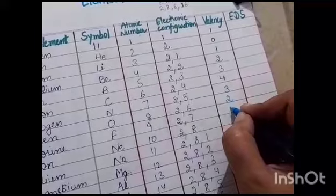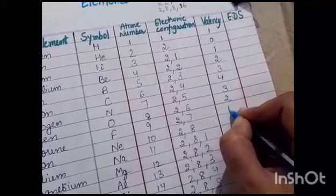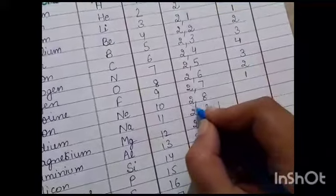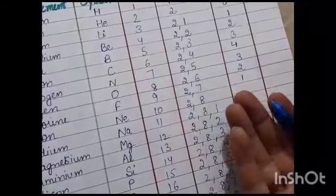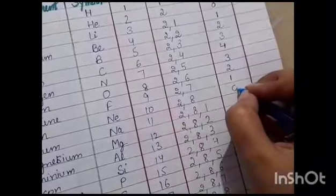2 electrons. 1 electron. And here the octet is complete. So no electron is loosely bound. Nothing is to gain. So the valency is zero.